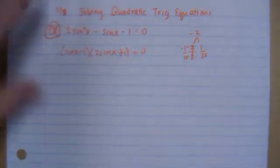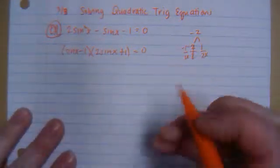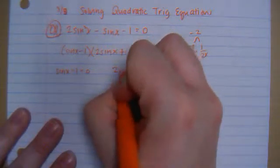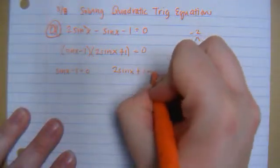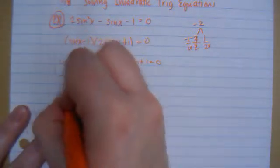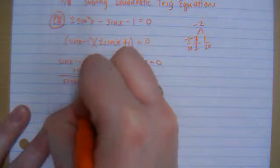Then, as we did yesterday, we're going to take each piece and set it equal to 0. So I'm going to have sine x minus 1 equals 0, and 2 sine x plus 1 equals 0. If I were to solve this, I'm going to add 1 to both sides. So sine x equals 1.